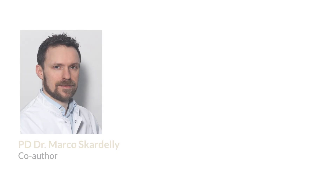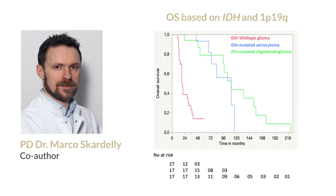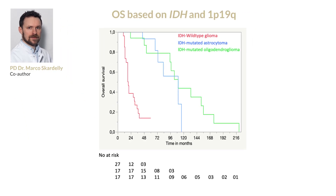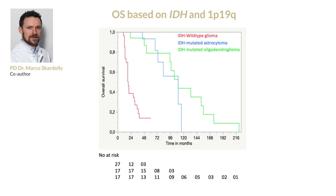To this end, we performed univariate and multivariate COX regression and Kaplan-Meier analysis. In this Kaplan-Meier curve, we see the overall survival of patients in our cohort. As expected, we observe better overall survival in IDH1 mutant patients compared with IDH wild-type glioma. However, there is not a large difference — at least in our cohort — between the IDH-mutated astrocytoma and oligodendroglioma.